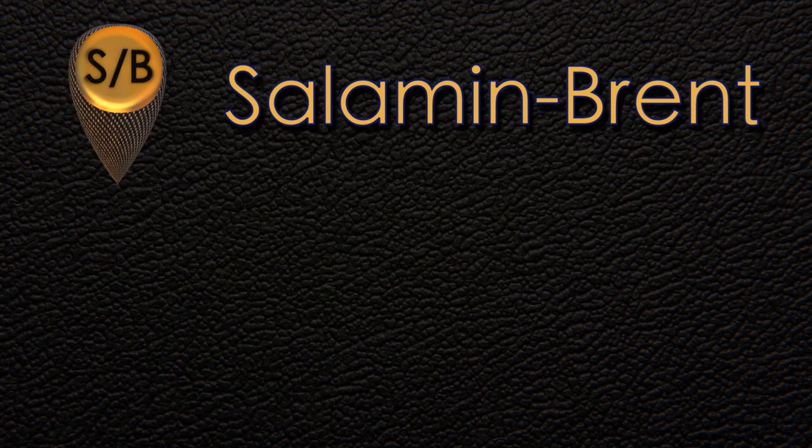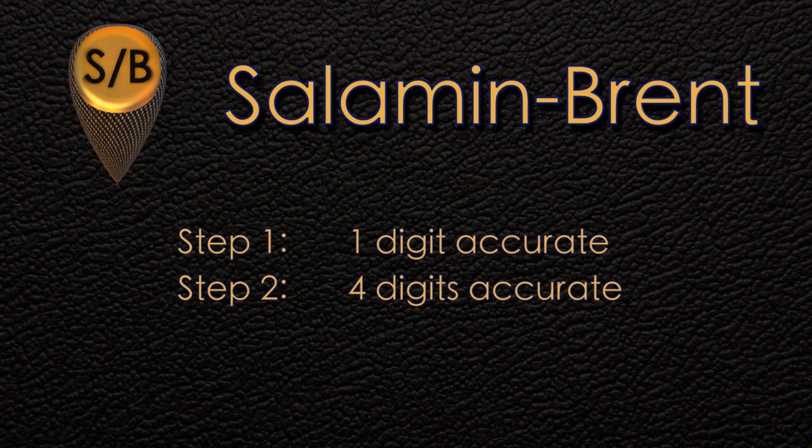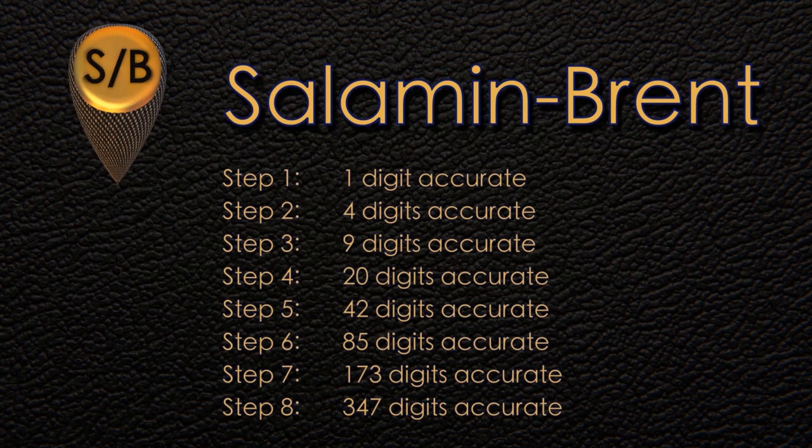It ends up calculating the digits of pi in a really interesting way. On the first step, you get one accurate digit of pi. On the second step, you get up to four digits. On the third step, you get up to nine digits. So you start off pretty slow. But with each step, you're getting approximately twice as many digits as you had before. If you go up to eight steps, you get 347 accurate digits of pi. If you go up to 24 steps, that actually gets you to 45 million digits of pi. So you can get very deep into pi with a very few number of steps.